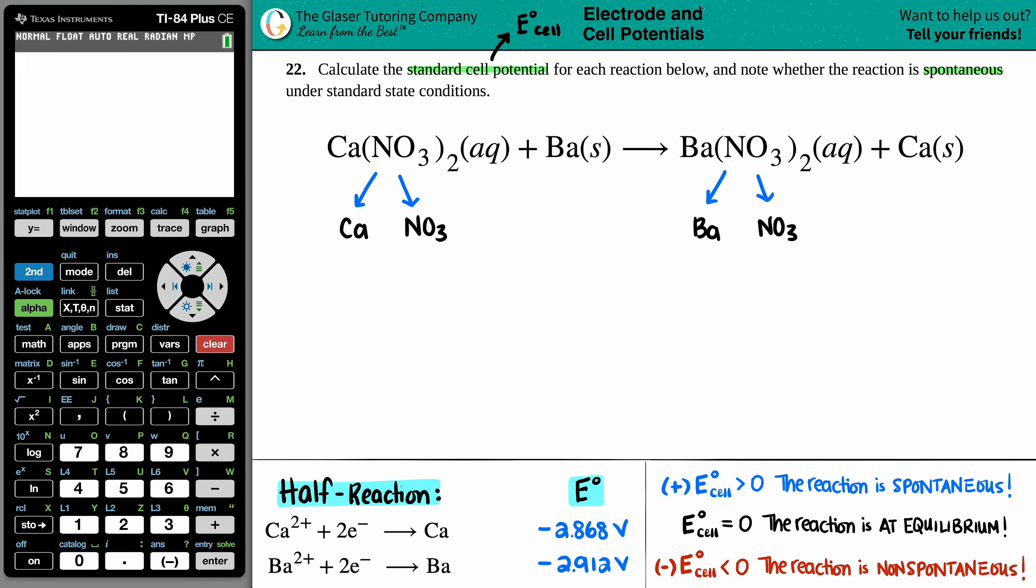But now I need charges. Well, you can take the coefficients, not the coefficients, the subscripts. You could take the subscripts and crisscross them back up. This one will tell me that the NO3 is a negative one charge. And this two will tell me that the calcium is a plus two. Calcium is also in the second group. So it makes sense.